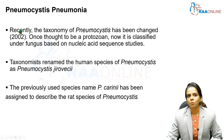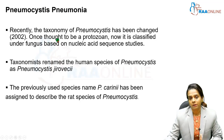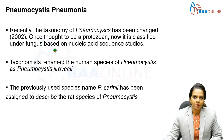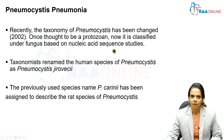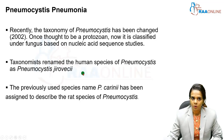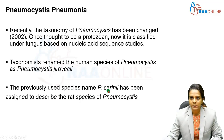Moving on to Pneumocystis pneumonia. This has been increasingly reported, especially after the discovery of HIV/AIDS. Recently the taxonomy of Pneumocystis has been changed — it was once thought to be a protozoan, but now it has been classified as a fungus based on nucleic acid sequence studies. Various nucleic acid sequence studies support this classification. Taxonomists have renamed the human species as Pneumocystis jirovecii, and the previously used species name has been reassigned to describe the rat species of Pneumocystis.